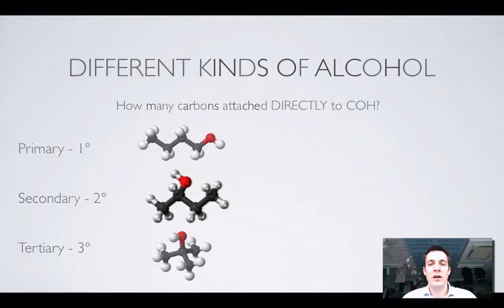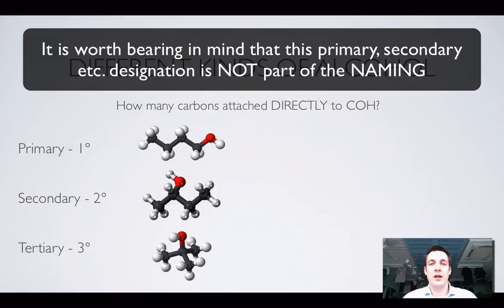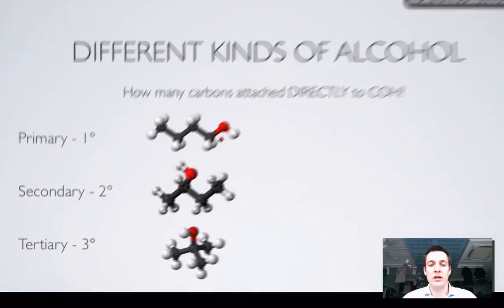Here are some different kinds of alcohols. You can have lots of different alcohols with different names. Here are three alcohols, all with four carbons—not only are they isomers of each other, but they're actually different kinds of alcohol because they've got different numbers of carbons directly attached to the alcohol carbon.